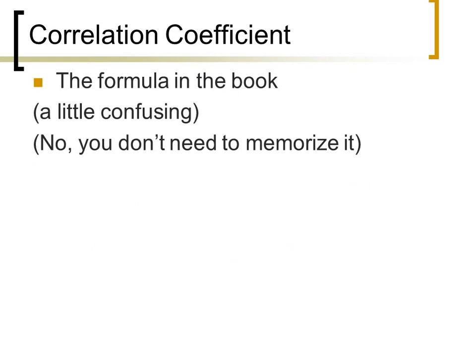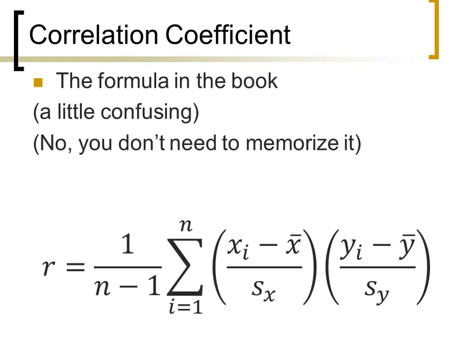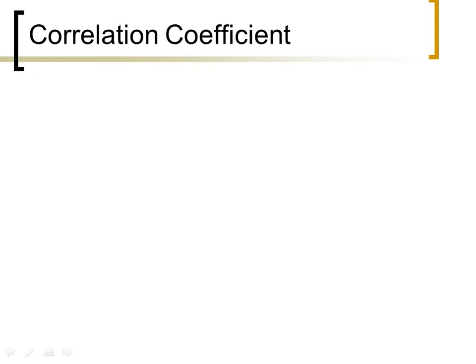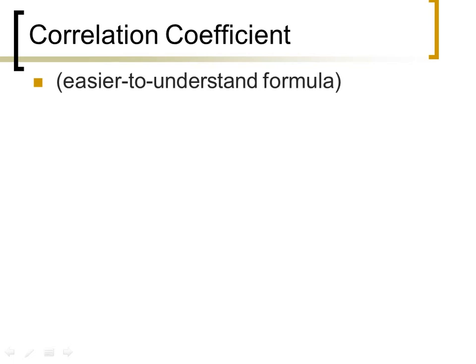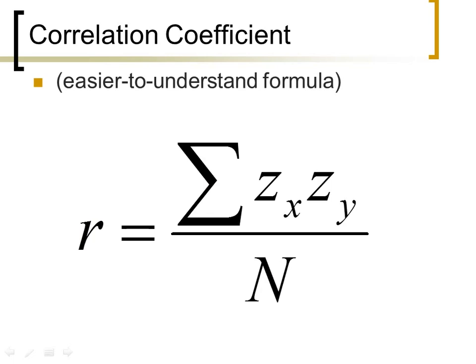The formula in the book for calculating the correlation coefficient has a lot of components but makes sense once you work with it for a while. You'll notice things like deviations of x from its mean and deviations of y from their mean, divided by their standard deviations — that's essentially a z-score. Then there's a 1-over-(n-1) factor, so there's some averaging and z-score standardization happening. A simpler conceptual formula — not practical for hand calculation — is just the sum of the cross products divided by n: the average of all the zx·zy values.